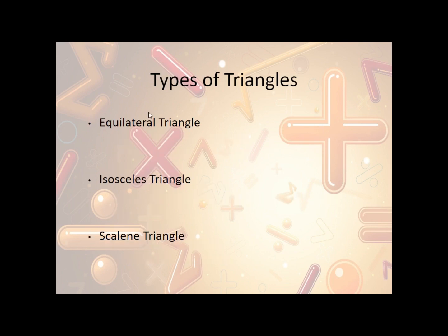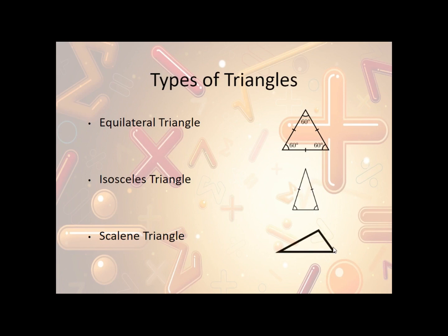Here's what these look like: an equilateral triangle has all sides the same and all angles the same. An isosceles triangle has two sides that are the same and the opposite angles that are the same. A scalene triangle is more random — all the sides and all the angles are different.